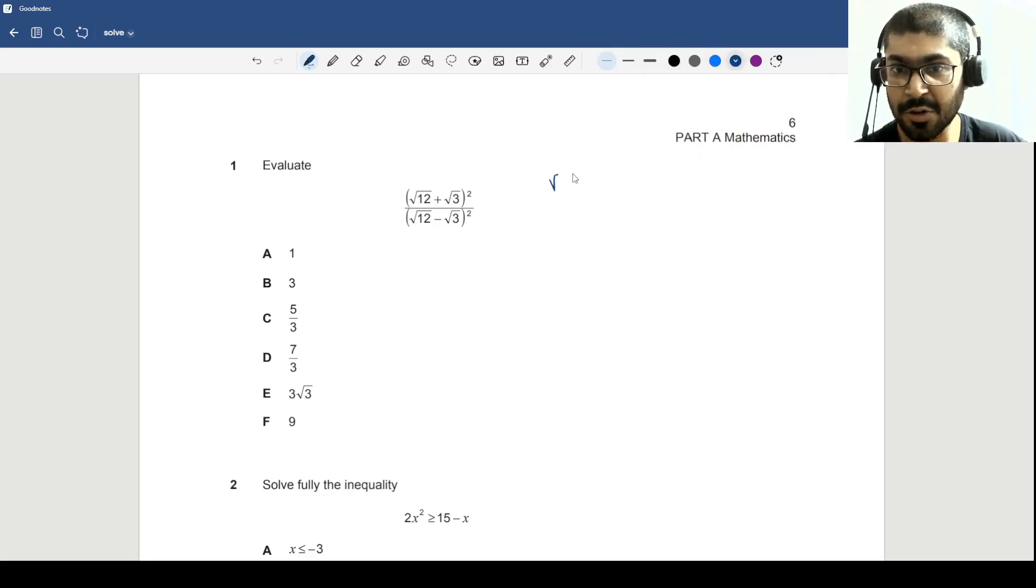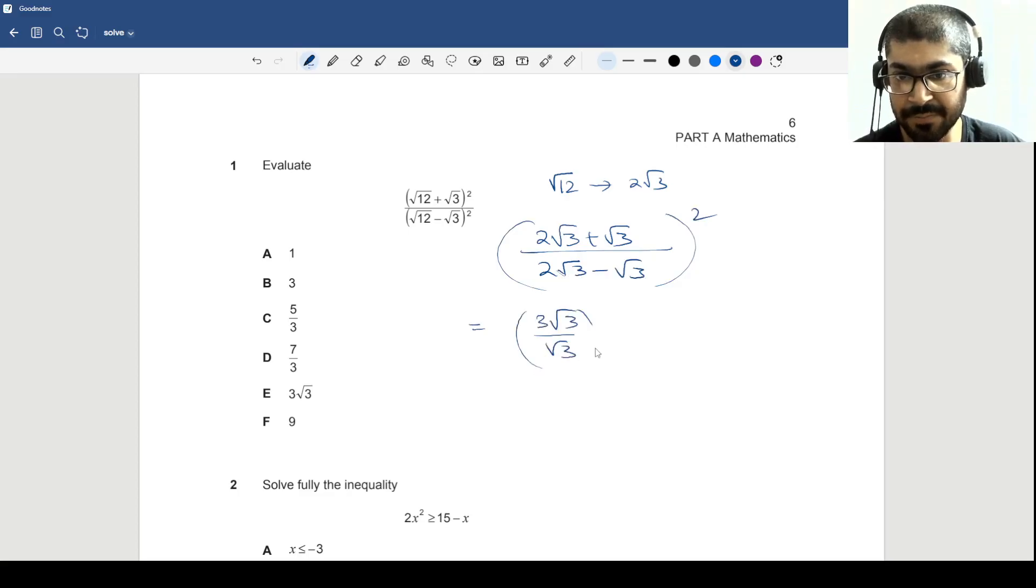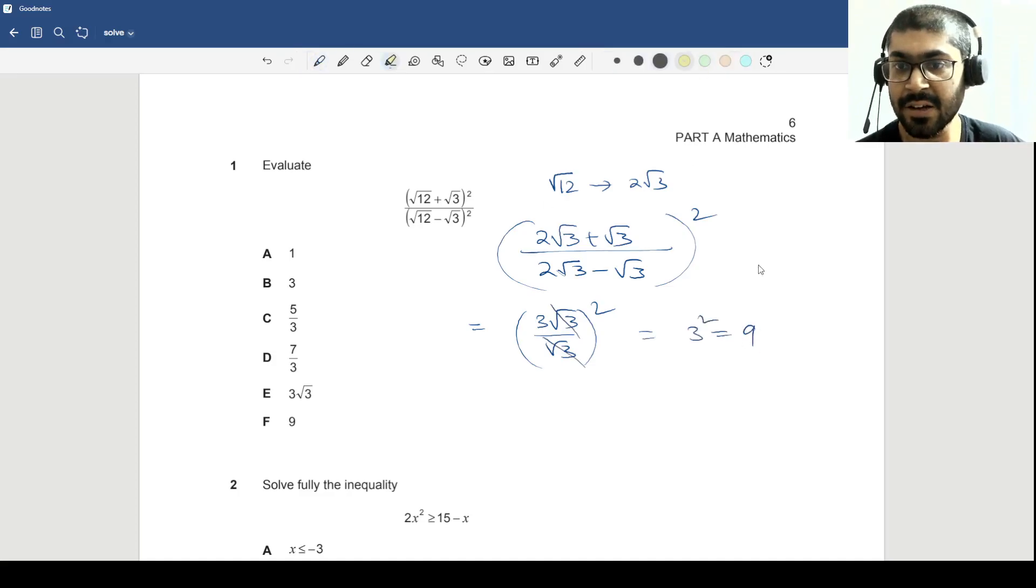So how are they favorable to us? √12 is 2√3. So if I replace this, I will get 2√3 plus √3 whole square. I can just write it as 2√3 minus √3 and put this entire thing under whole squares. So this will just give you 3√3 divided by √3 whole square. Now these cancel out and you end up with 3 square equals 9. Very easy. I think that gives you option F. Option F is correct.